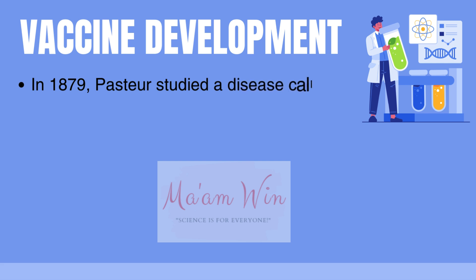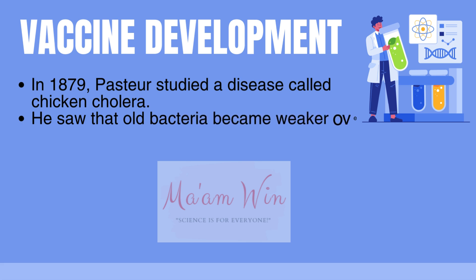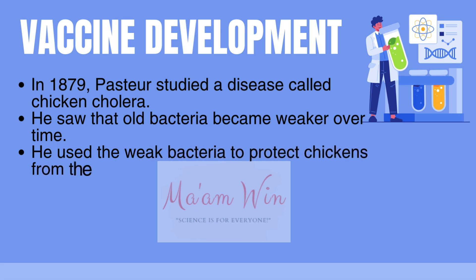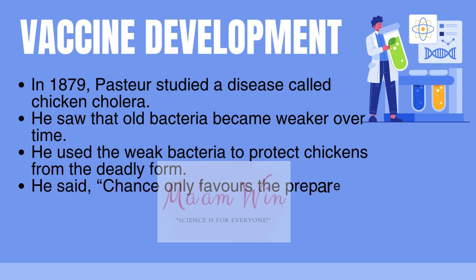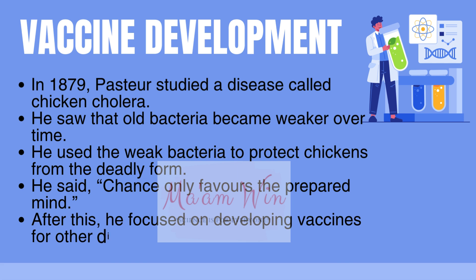In 1879, Pasteur made a major discovery while studying chicken cholera. He noticed that bacteria lost their ability to cause serious illness but could still protect chickens from diseases. This happened by chance, leading him to say, 'Chance only favors the prepared mind.' He used his idea of weakened germs to develop immunity and then applied it to create vaccines for other diseases.